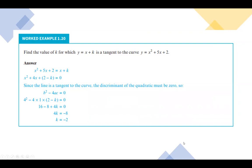Now let's find the value of k for which y equals x plus k is a tangent to the curve y equals x squared plus 5x plus 2. We have equation one: y equals x plus k, and equation two: y equals x squared plus 5x plus 2.